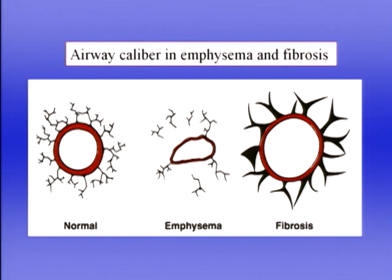This cartoon shows airway caliber in emphysema versus fibrosis. Normally, plenty of alveolar walls surround the airway, providing radial traction to hold it open. In emphysema, many alveolar walls are destroyed, so the airway is more prone to collapse. In fibrosis, the opposite occurs: fibrous scar tissue around the airway pulls it open, which explains the relatively high flow rates during expiration seen in restrictive disease.